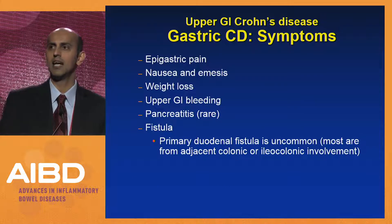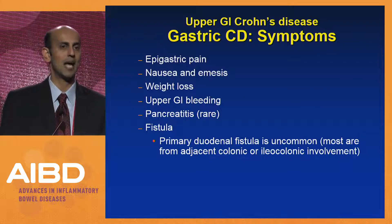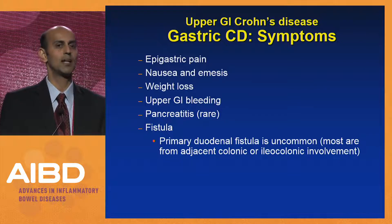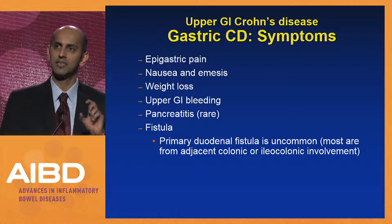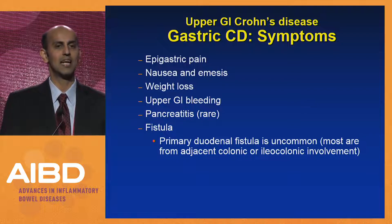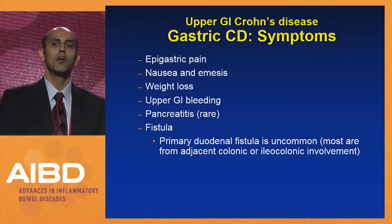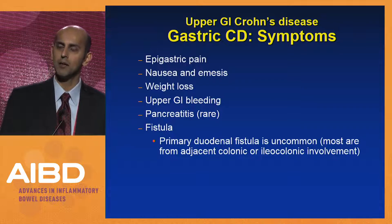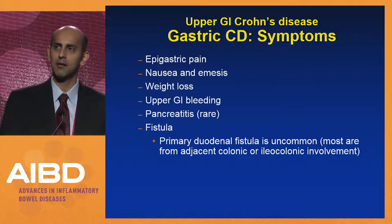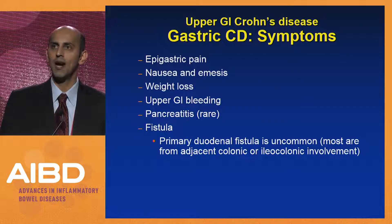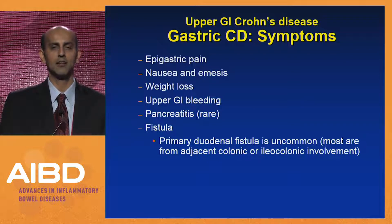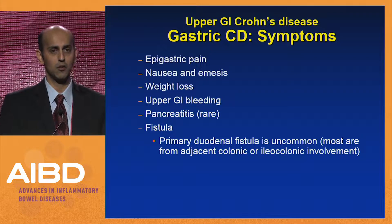The symptoms of gastric Crohn's disease are similarly nonspecific: epigastric pain, nausea, emesis, weight loss, and upper GI bleeding. There are rare case reports of pancreatitis from duodenal Crohn's if involvement is in the second part of the duodenum. You'll also frequently see on imaging reports of a possible duodenal fistula when patients have penetrating Crohn's disease in the ileum or transverse colon — but these very rarely represent primary duodenal pathology; they usually start from the inflamed small intestine or colon.